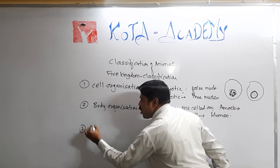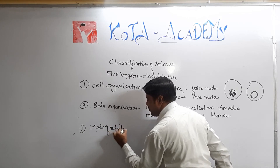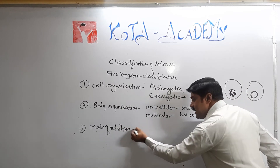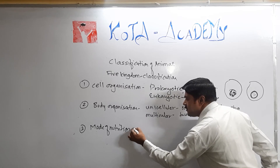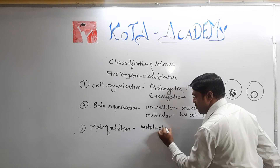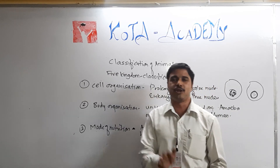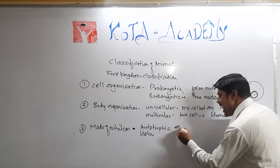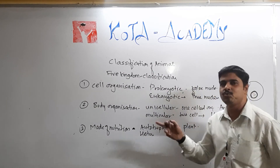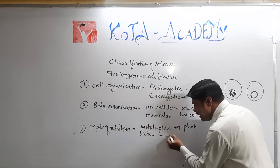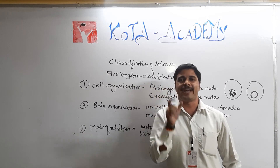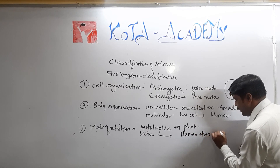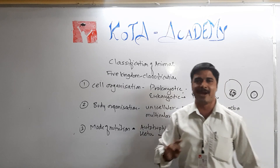The third criteria is the mode of nutrition — whether the organisms are autotrophic or heterotrophic. Autotrophic means plants or organisms that prepare their own food. Heterotrophic organisms, like human beings and other animals, depend on other organisms for food.